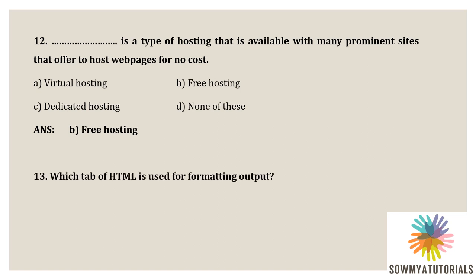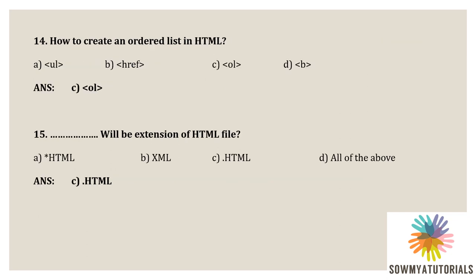Next question: Which type of HTML tag is used for formatting output? Option A: A tag. Option B: Body tag. Option C: B tag. Option D: Title tag. The body tag is used for formatting the output in HTML.